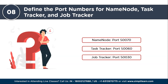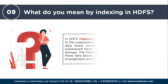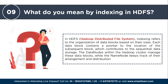The next question: what do you mean by indexing in HDFS? In HDFS — the Hadoop Distributed File System — indexing refers to the organization of data blocks based on their sizes. Each data block contains a pointer to the location of the subsequent block, contributing to sequential data storage. The data nodes within the Hadoop cluster manage these data blocks, while the name node keeps track of their arrangement and distribution.